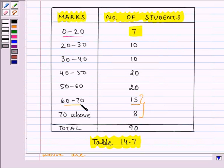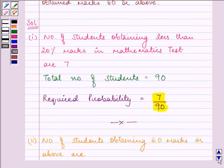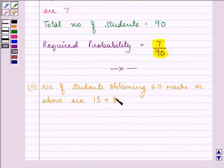15 students obtained marks between 60 and 70, and 8 students obtained more than 70. So the total is 15 plus 8, which equals 23.